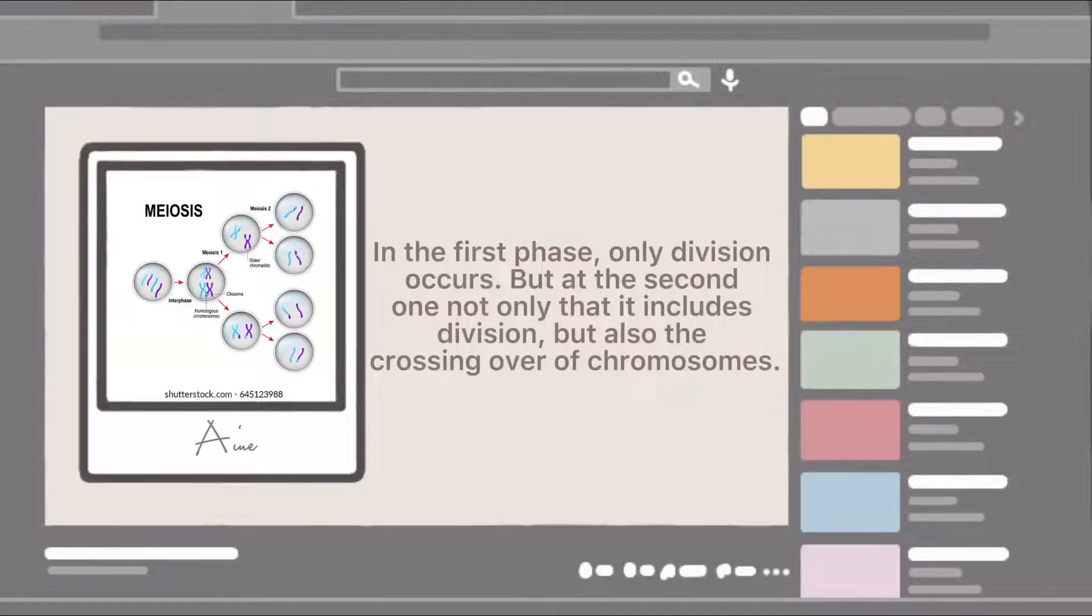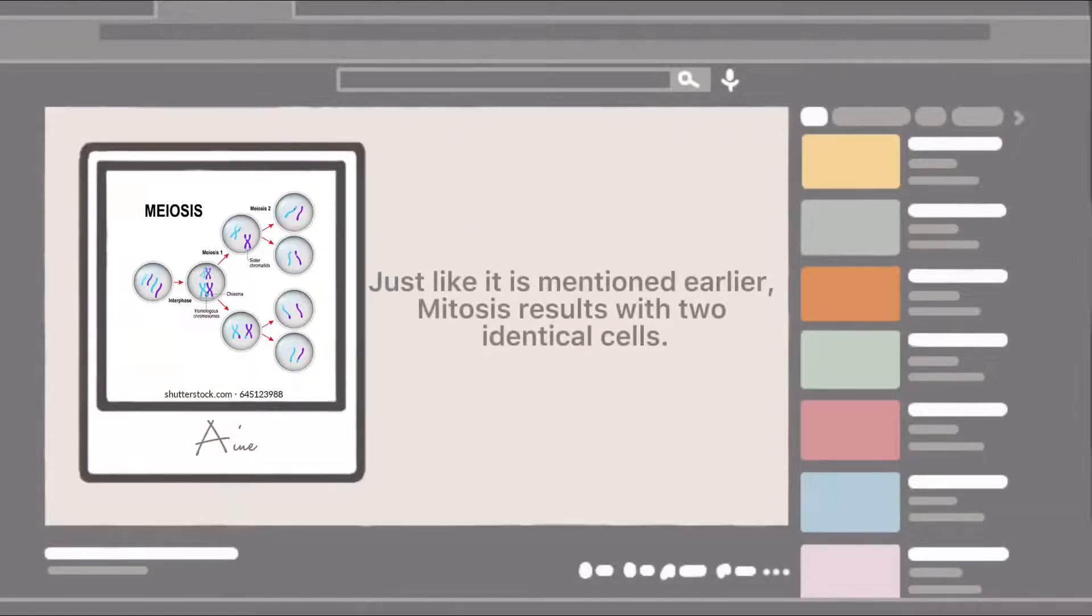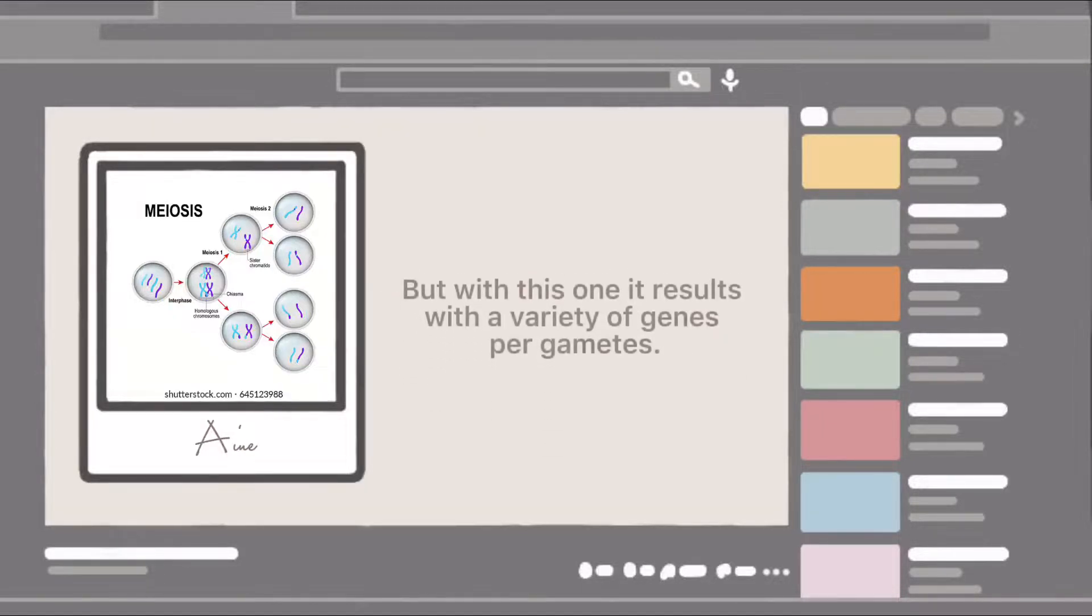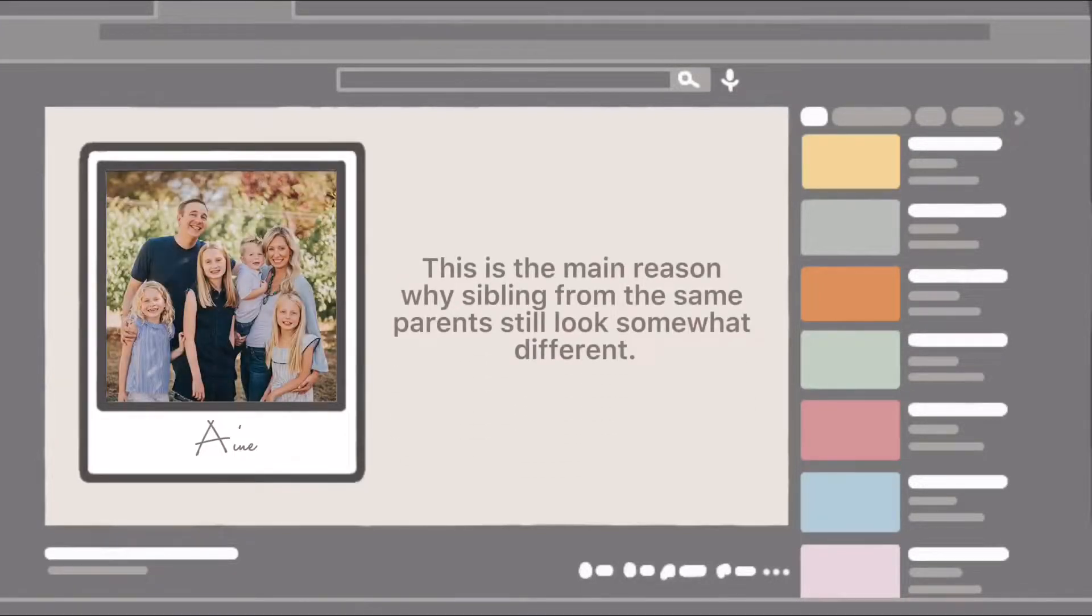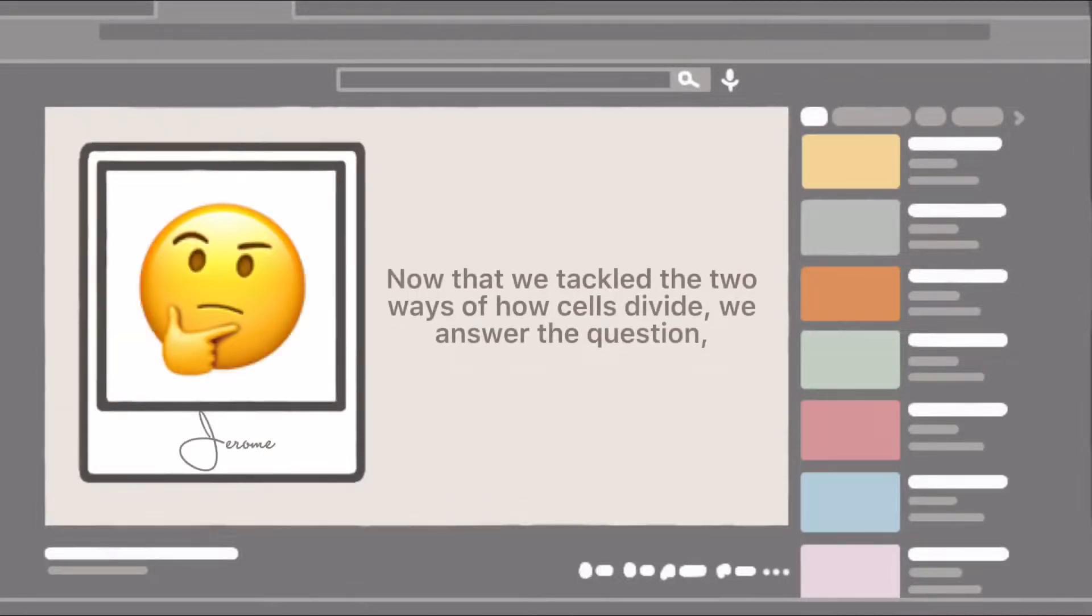But at the second one, not only does it include division, but also the crossing over of chromosomes. Just like mentioned earlier, mitosis results with two identical cells, but with this one it results with a variety of genes per gametes. This is the main reason why siblings from the same parents still look somewhat different.